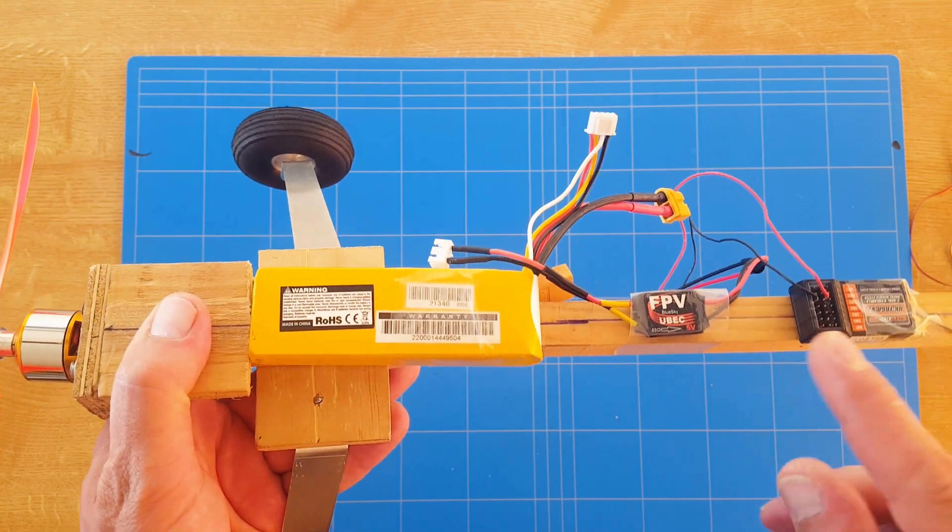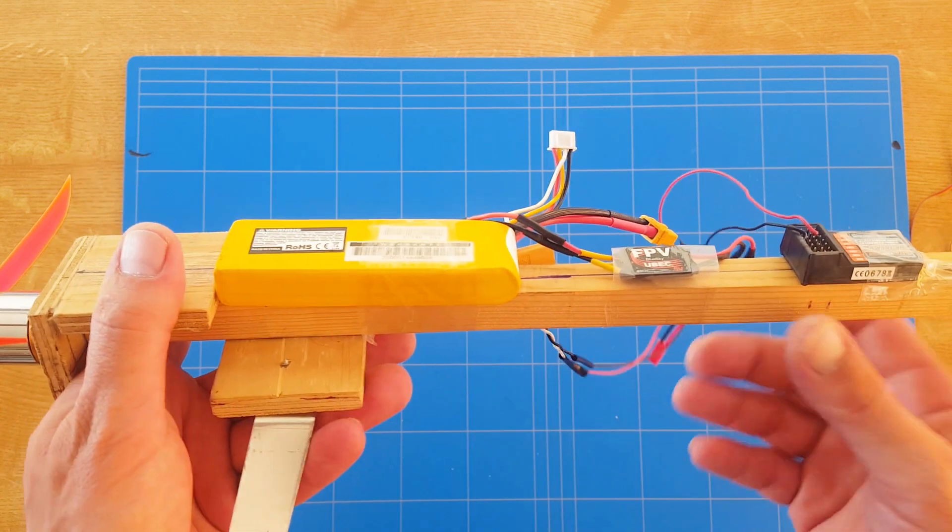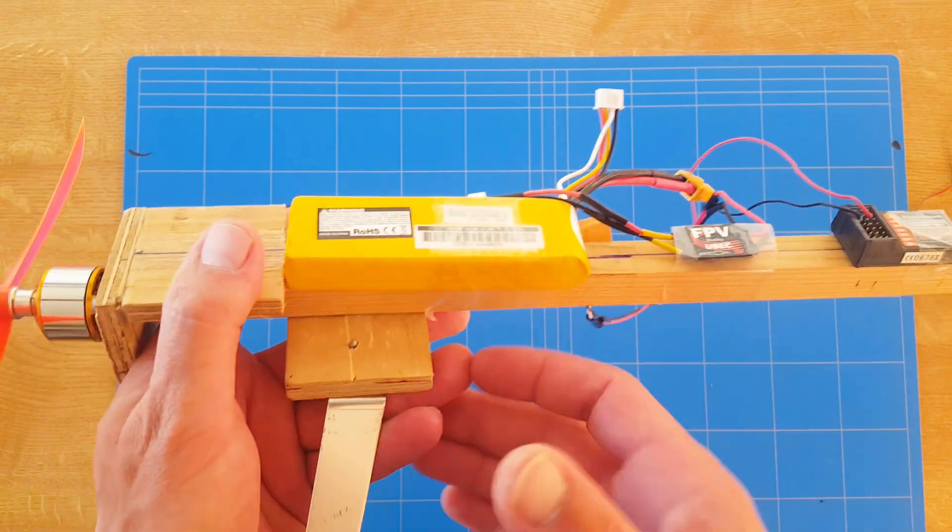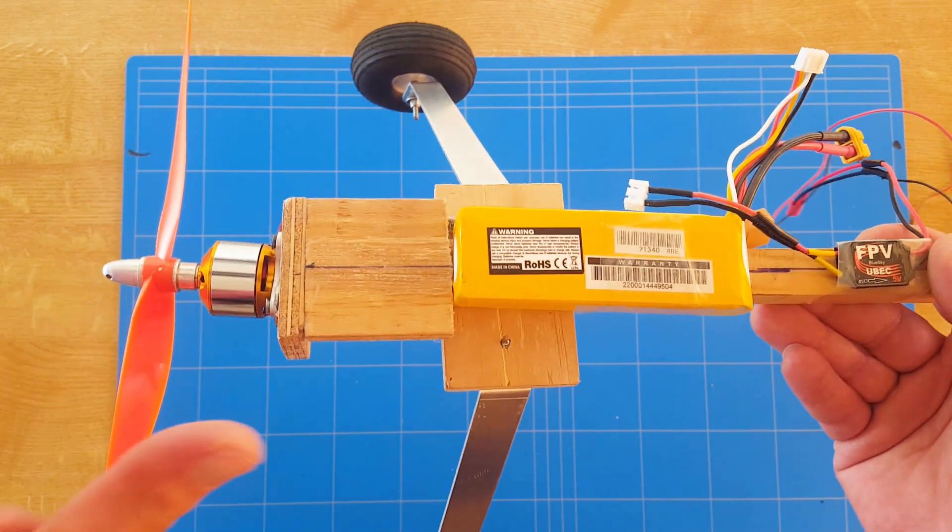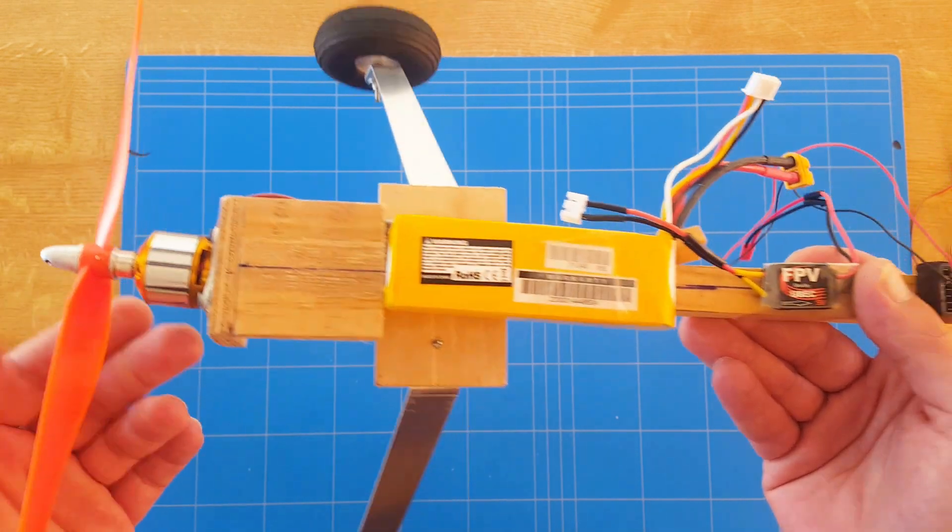Now we have added the receiver, we have added the 5-volt BEC to power up the receiver, we have added the battery—just all taped just temporarily, just to find the place. Maybe we can change it up later, but just to find the CG of the body. We have added all the components, even the propeller.